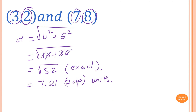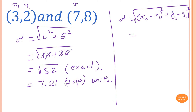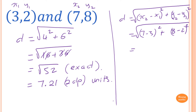Using the distance formula: with (x1, y1) = (3, 2) and (x2, y2) = (7, 8), we get √((7 − 3)² + (8 − 2)²). Typing into the calculator gives 52 under the square root, so the answer is again 7.21 units to two decimal places.